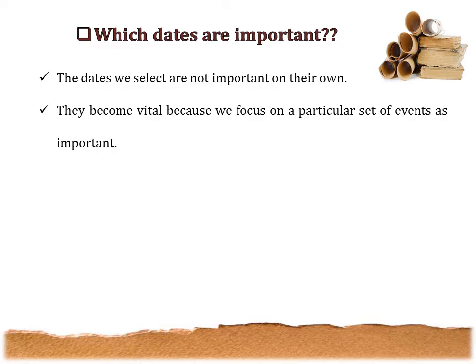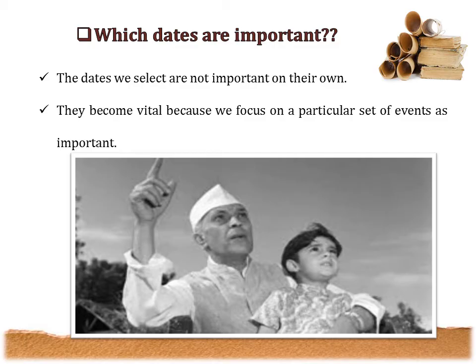Now, which dates are important — what is the criteria required to choose a set of dates as important? The dates we select are not important on their own. For example, is the day we were born as important as any other historical date? No. Dates become vital when we focus on a particular set of events as important. For example, Jawaharlal Nehru's birthday is on 14th November and is celebrated as Children's Day as a tribute to our first Prime Minister, because he contributed a lot to the children and youth — ensuring free education and establishing many educational institutions.